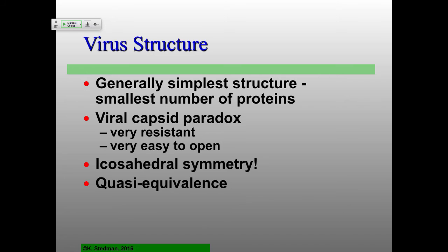We'll talk about icosahedral symmetry. The main message is it's a way to get pretty close to a sphere with very similar — in some cases absolutely identical — subunits and their interactions. Then we'll talk about quasi-equivalence: how you can go from a soccer ball with five-fold axes of symmetry to also having some six-fold axes of symmetry.